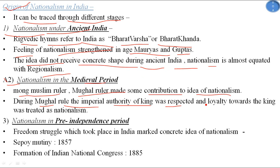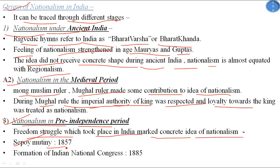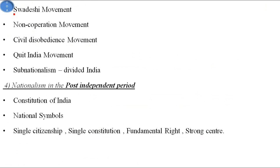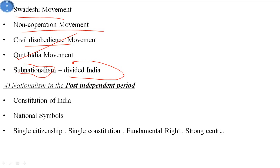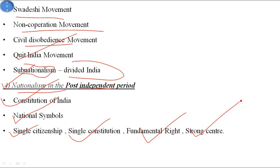The second stage is nationalism in the medieval period. Among Muslim rulers, the Mughals made some contribution to the idea of nationalism — the imperial authority of the king was respected and loyalty towards the king was treated as nationalism. The third stage is nationalism in the pre-independence period, where freedom struggles marked the concrete idea of nationalism through events like the Sepoy Mutiny of 1857, formation of the Indian National Congress in 1885, the Swadeshi Movement, Non-Cooperation Movement, Civil Disobedience Movement, and the Quit India Movement. The fourth stage is nationalism in the post-independent period, where the Constitution of India, national symbols, single citizenship, single constitution, fundamental rights, and a strong center are its characteristics.